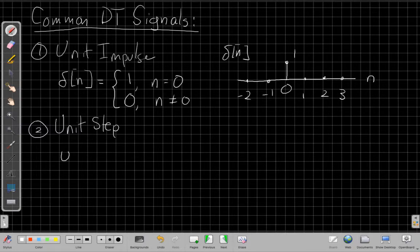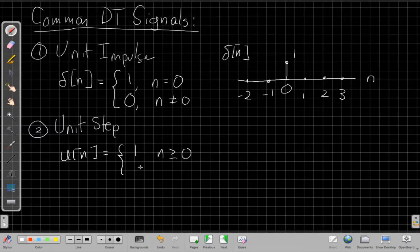The unit step is another common one we'll use a lot. And the unit step u of n is equal to 1 for n greater than or equal to 0 and 0 for n less than 0.